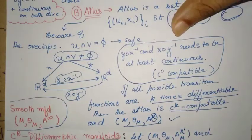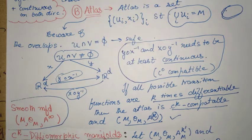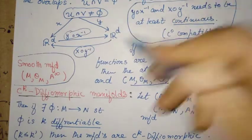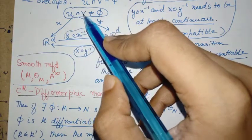So now, this is the entire characterization of atlas and what it means to be a smooth manifold. So I hope this is clear.